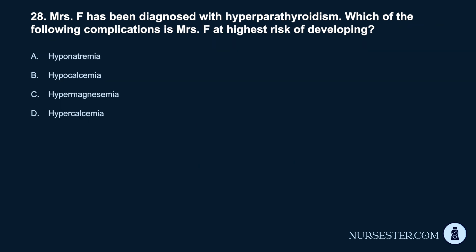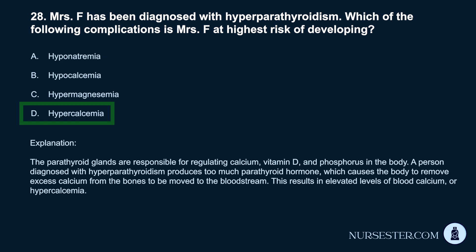Question 28. Mrs. F has been diagnosed with hyperparathyroidism. Which complication is Mrs. F at highest risk of developing? a. Hyponatremia. b. Hypocalcemia. c. Hypermagnesemia. d. Hypercalcemia. Correct answer: d. Hypercalcemia. The parathyroid glands are responsible for regulating calcium, vitamin D, and phosphorus in the body. A person with hyperparathyroidism produces too much parathyroid hormone, which causes the body to remove excess calcium from the bones into the bloodstream, resulting in elevated blood calcium or hypercalcemia.